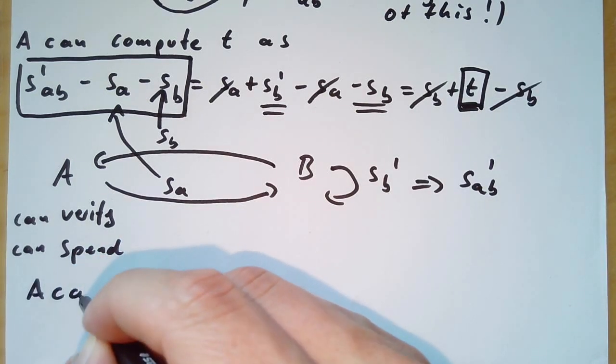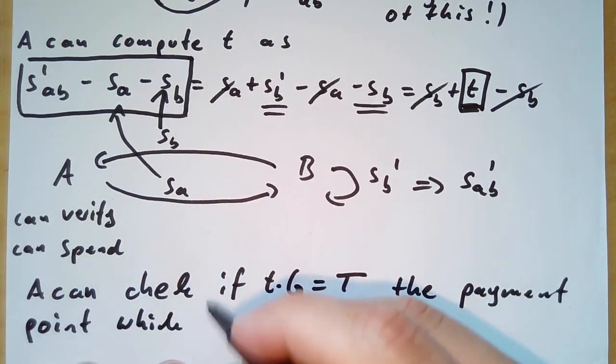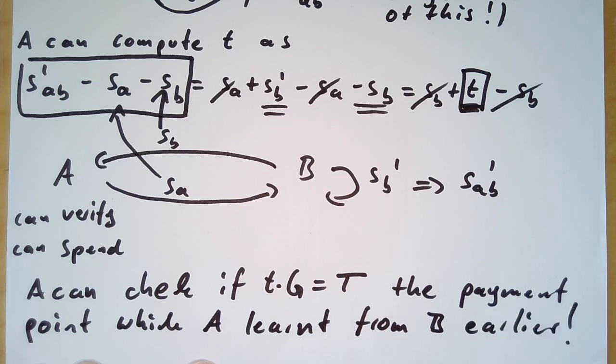And a can also check if t times g is capital T, which is the payment point that a might have learned from b earlier. And remember the payment point is the equivalent to the payment hash. I don't know about you but I personally find this construction pretty dope.